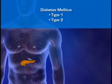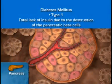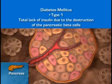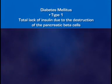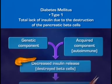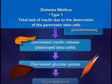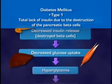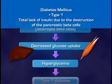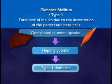Diabetes mellitus is currently classified into two primary types: Type 1 and Type 2. Type 1 diabetes is characterized by a total lack of insulin caused by the destruction of the pancreatic beta cells. Type 1 is thought to arise from interaction between a genetic component and an acquired or environmental component, predominantly in response to an autoimmune process. Type 1 diabetes probably develops over the course of years, with beta cell destruction happening well before the disease is diagnosed. Diagnosis is usually in childhood.